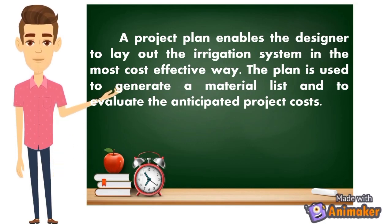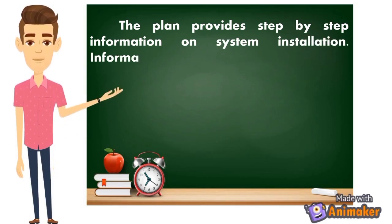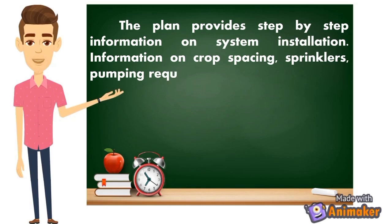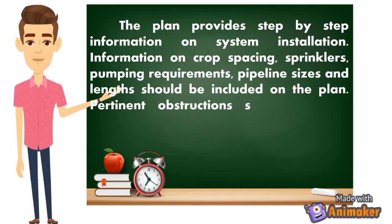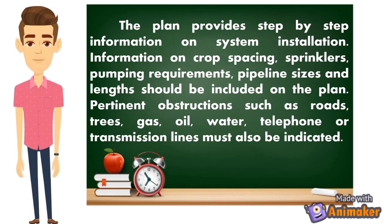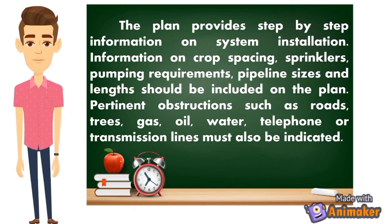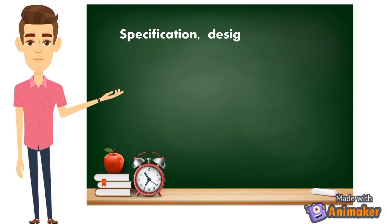The plan provides step-by-step information on system installation. Information on the crop spacing, sprinklers, pumping requirements, pipeline size and lengths should be included on the plan. Pertinent obstructions such as roads, trees, gas, oil, water, telephone, or transmission lines must also be indicated. So sa pagpaplano, step by step siya — kailangan specific yung mga information na ilalagay mo sa plano mo.